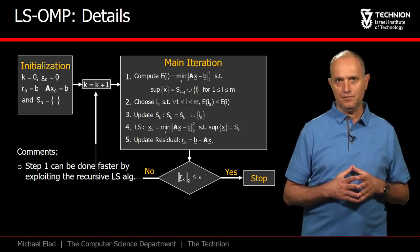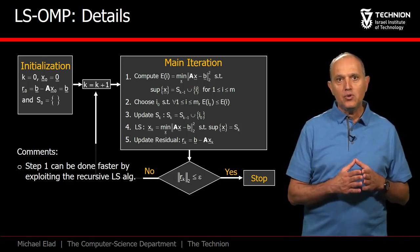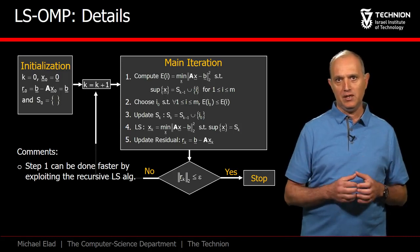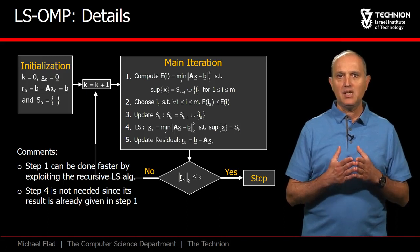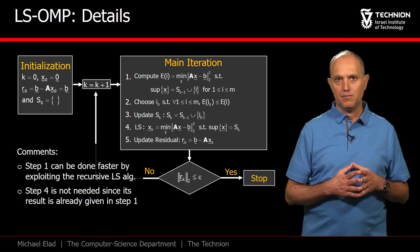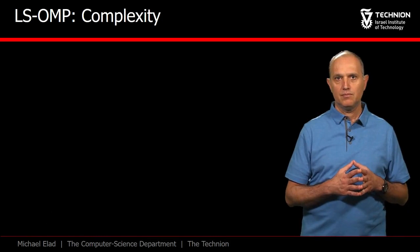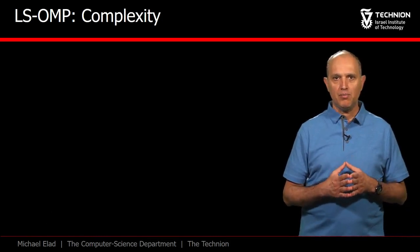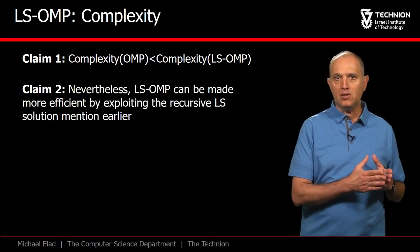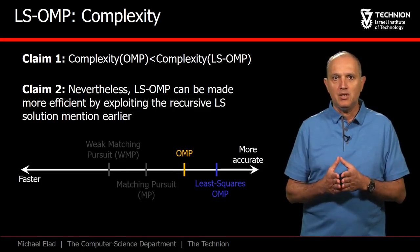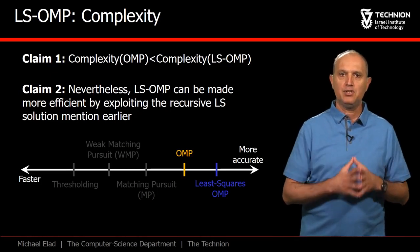A few comments are in order here. First, in the sweep stage where we solve m least squares problems, we could use the speedup recursive method mentioned earlier. Secondly, step 4 is not really needed because its result is already created by step 1. Lastly, as opposed to the OMP, the residual has hardly any role here. How does this algorithm compare with OMP? Clearly it is more complex; however, it can benefit from some numerical shortcuts that will make it almost as appealing. Least Squares OMP resides higher on the accuracy scale, likely to provide a better approximation solution.